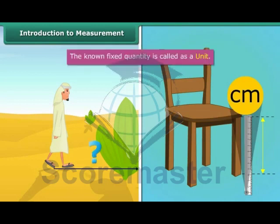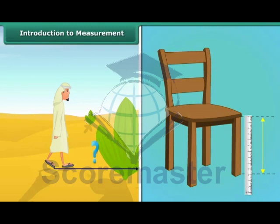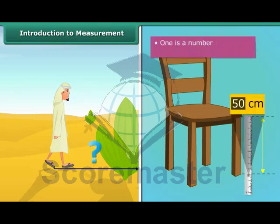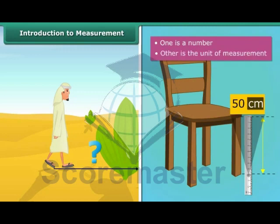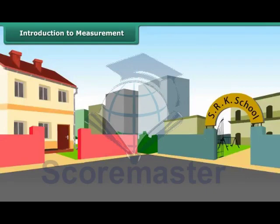The known fixed quantity is called as a unit. When you derive the results of this calculation, you get the measurement in two parts. One is a number and the other is the unit of the measurement. You can also calculate the distance of one place to another. For example, the distance from school to your house.